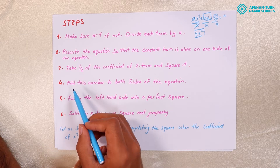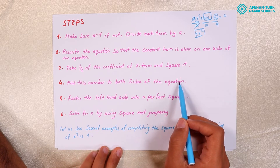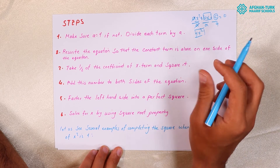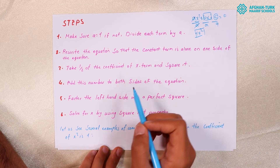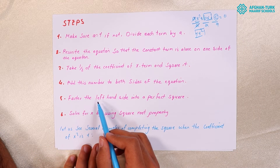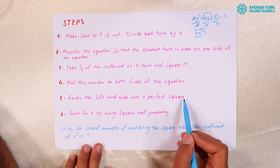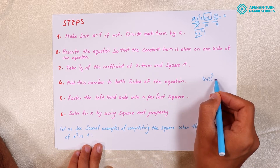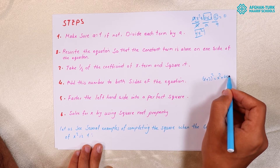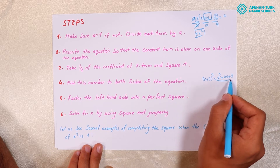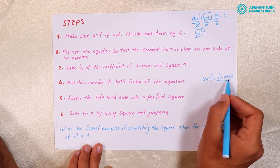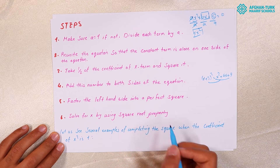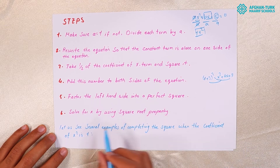Square it — divide the X term by 2 and then square the result. Fourth, add this number to both sides of the equation. After dividing by one-half and squaring, add that number to both sides. Fifth, factor the left-hand side into a perfect square, as we mentioned. Sixth, solve for X by using the square root property. I will teach you how to solve this kind of question.